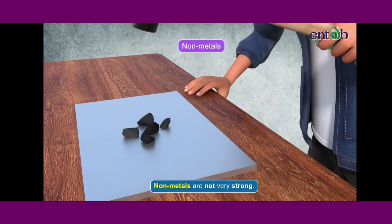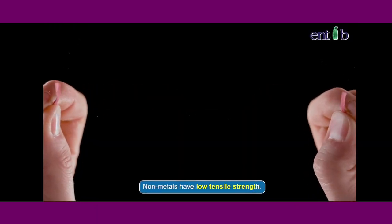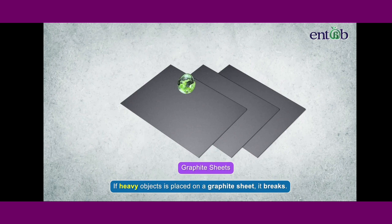Nonmetals are not very strong unlike metals. They have low tensile strength. This means that they cannot hold large weights. Let us take an example of a graphite sheet. If a heavy object is placed on a graphite sheet, it breaks.